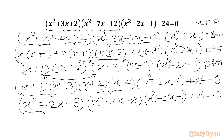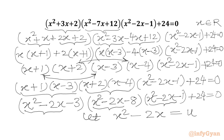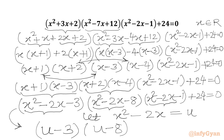We notice that x²-2x appears in all three expressions. Let us substitute u = x²-2x. This transforms the equation into a cubic: (u-3)(u-8)(u-1) + 24 = 0.